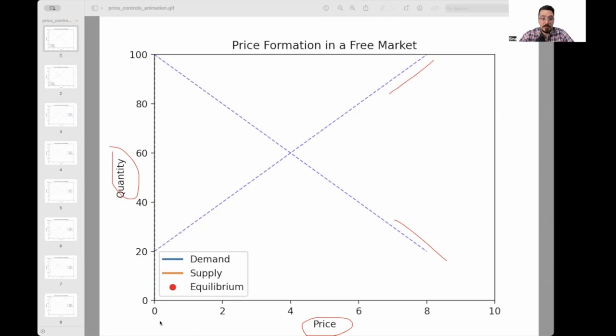Essentially, as price increases from zero to 10, in this example, demand goes down. But at the same time, as price increases, more producers are incentivized to produce. So supply goes up.